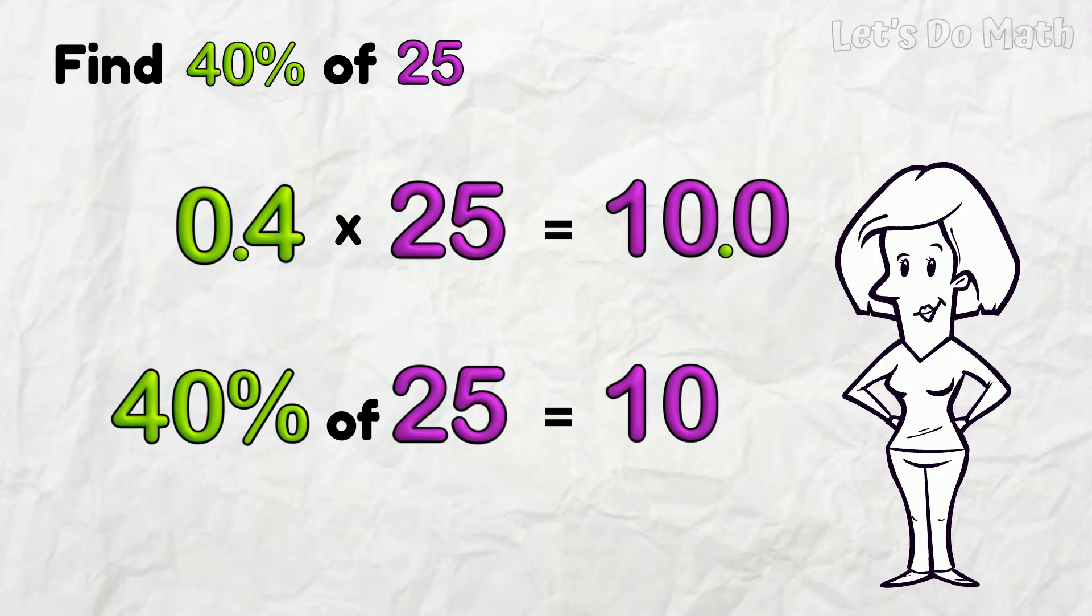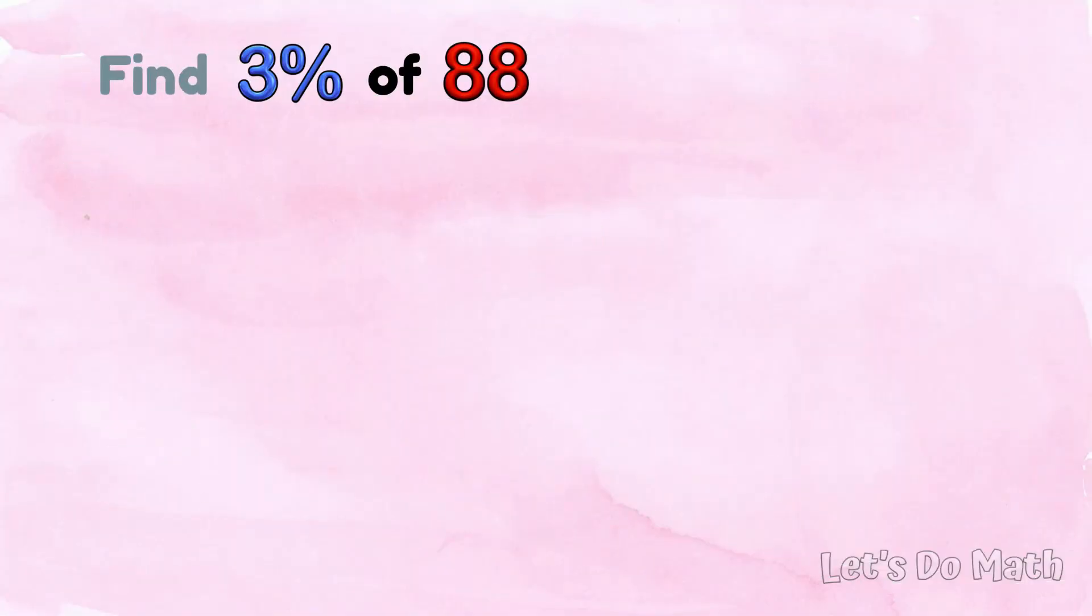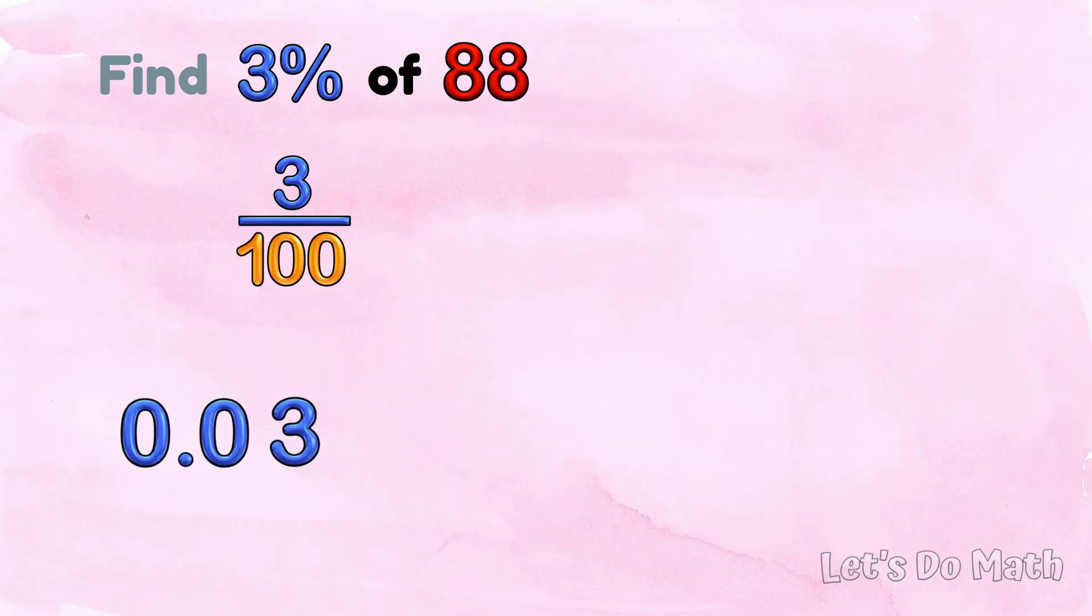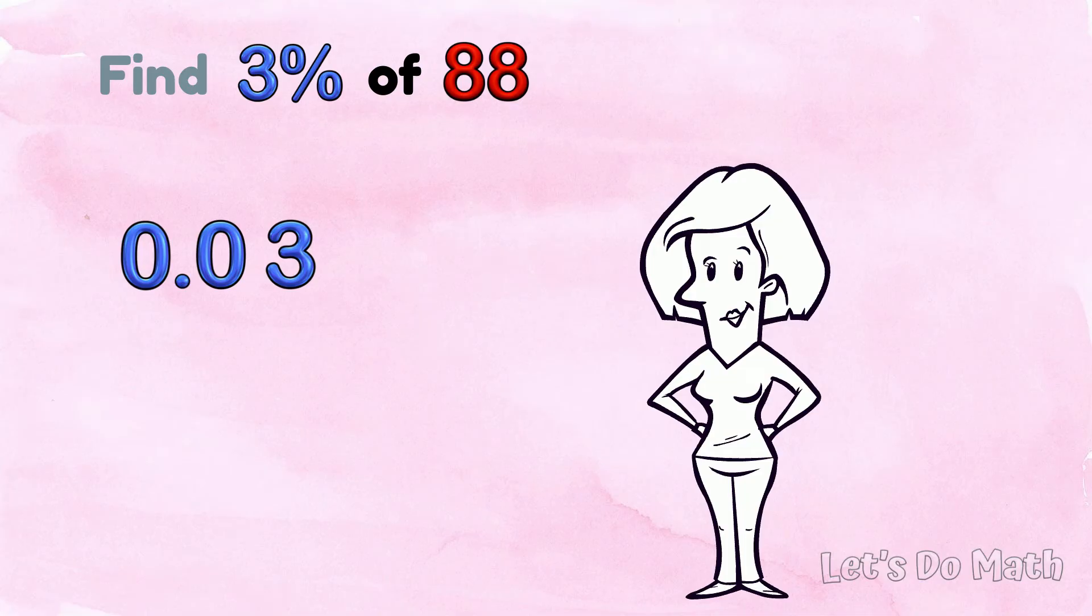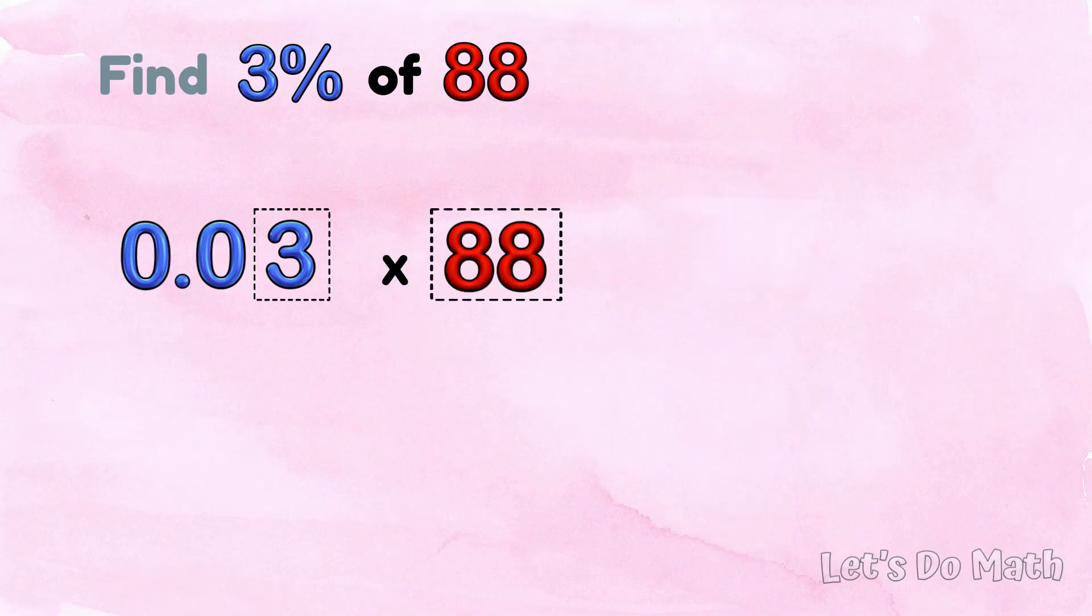Let's do another one! 3% of 88. 3% means 3 parts per 100 - 3 hundredths. As a decimal, that is 0.03. We're doing 0.03 x 88. These are the figures to multiply - set it up!